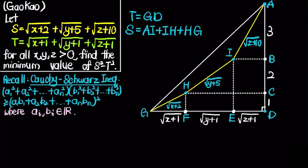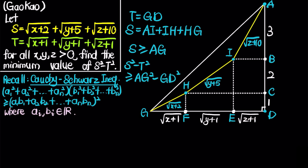We note that S ≥ AG, since the shortest distance between two points A and G is the straight line AG. Therefore, S² − T² ≥ AG² − GD². Since angle ADG is 90°, by the Pythagorean theorem AG² − GD² = AD². And AD = 1 + 2 + 3 = 6, so AD² = 36. This confirms the minimum value is 36, matching our first method.